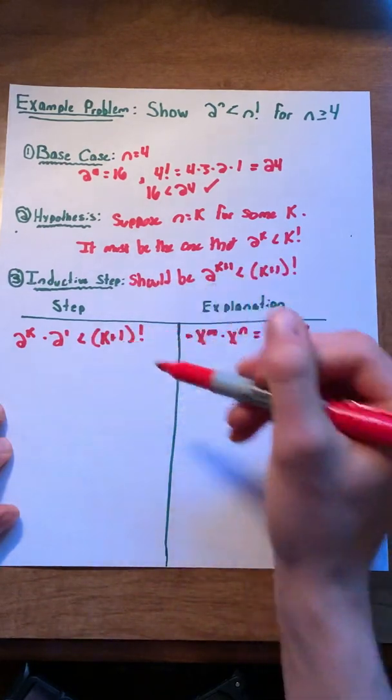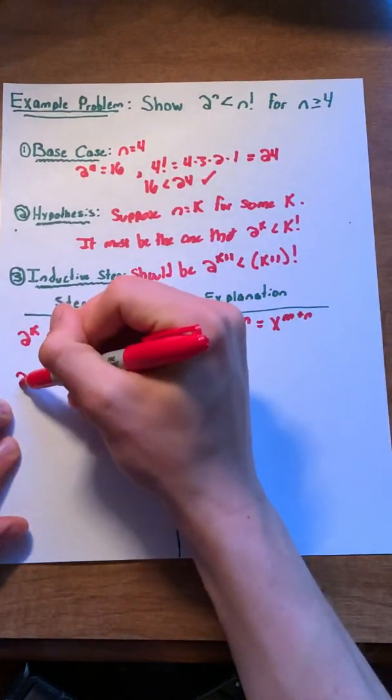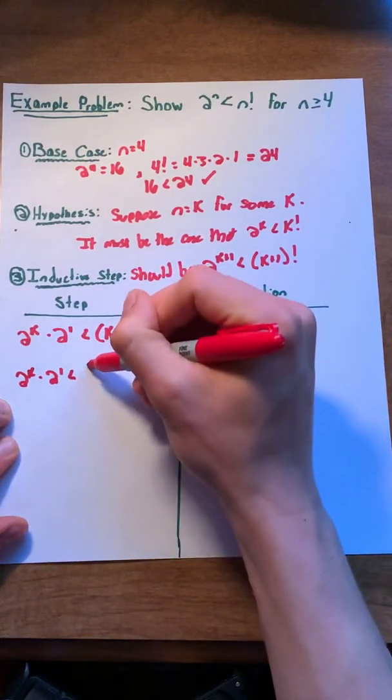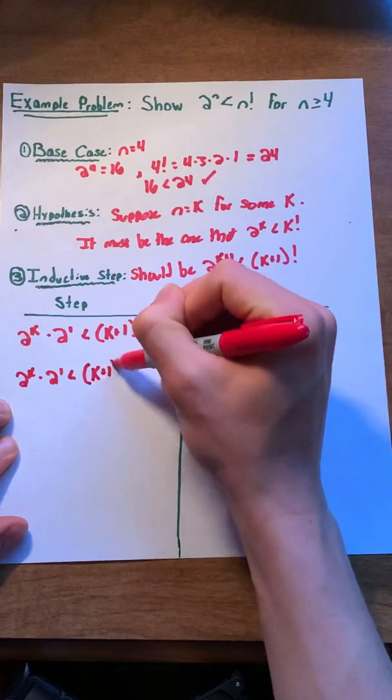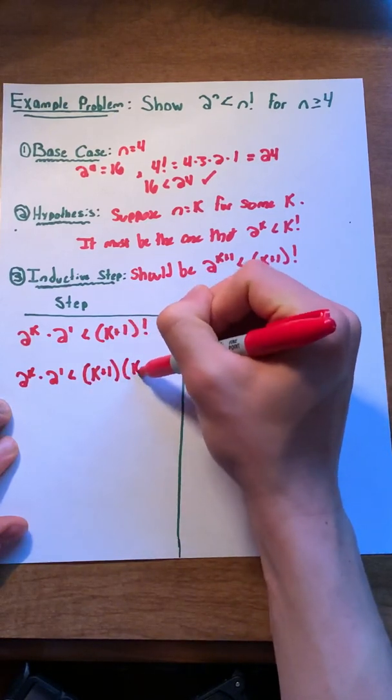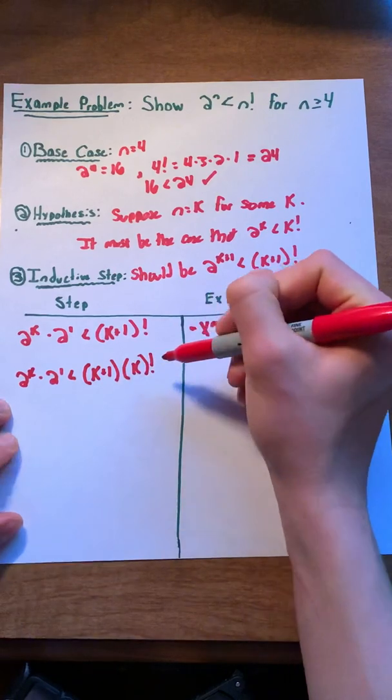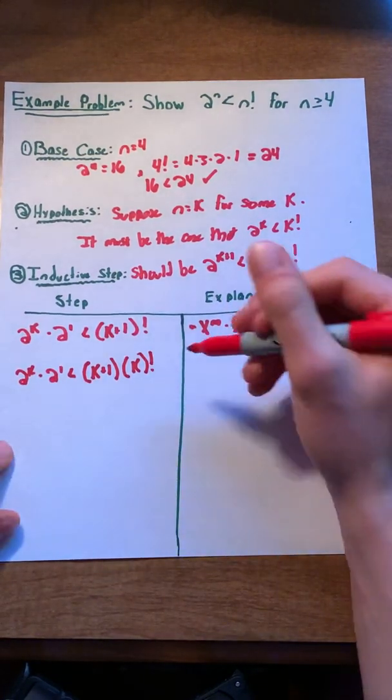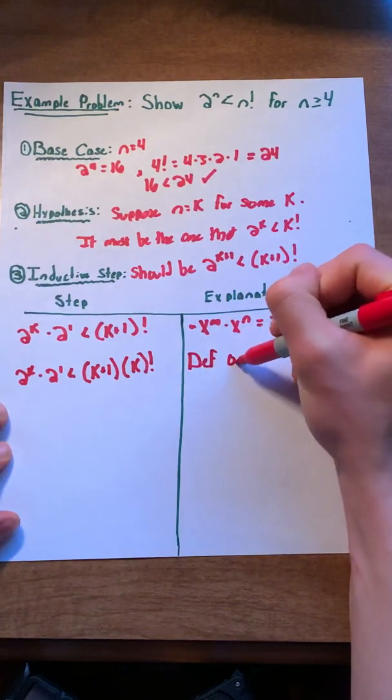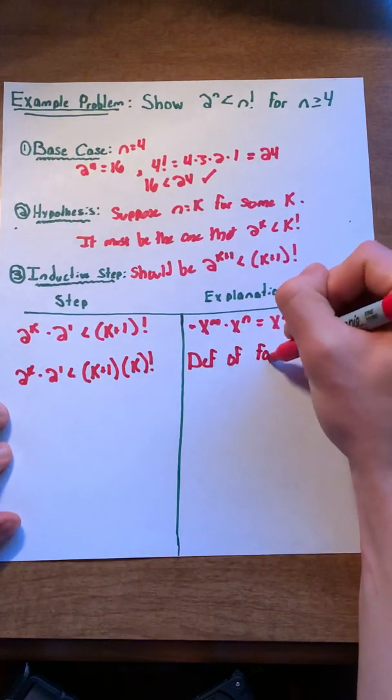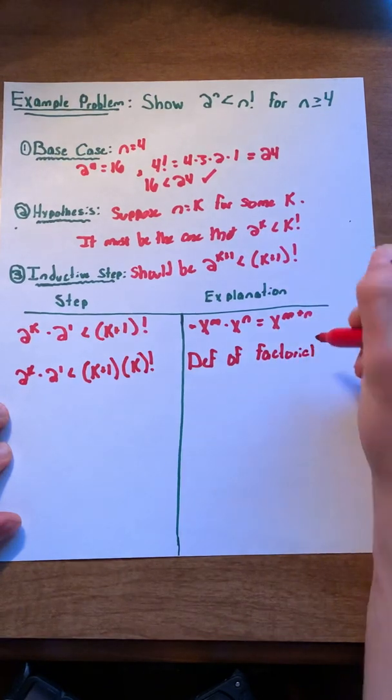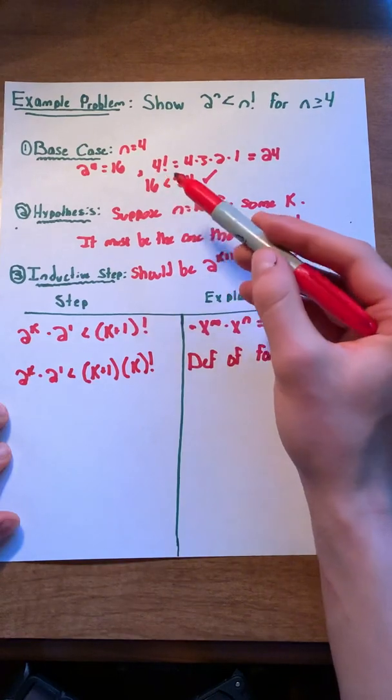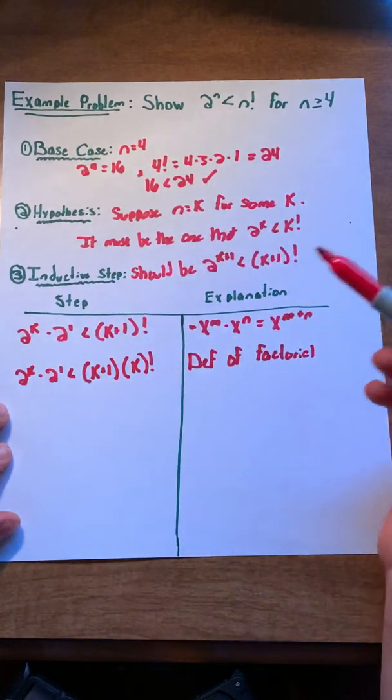Now, we're going to work on that factorial. We can actually say the k plus 1 factorial is equal to k plus 1 times k factorial. This is essentially the definition of a factorial. For example, above, we could have broken down 4 factorial into 4 times 3 factorial.